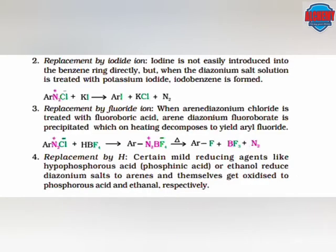Next, we will discuss further chemical properties of diazonium salts. The first is replacement by iodide ion. In this reaction, potassium iodide reacts with the diazonium salt; iodine gets attached to the aryl group to form aryl iodide plus potassium chloride along with nitrogen. In the next reaction, fluoride gets attached to the aryl group to form aryl fluoride along with boron trifluoride and nitrogen gas.